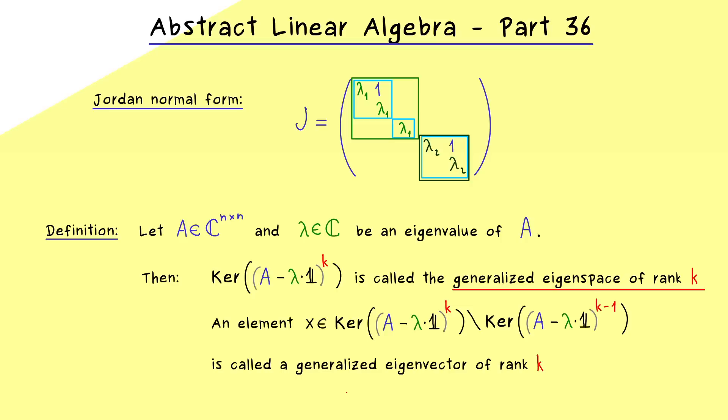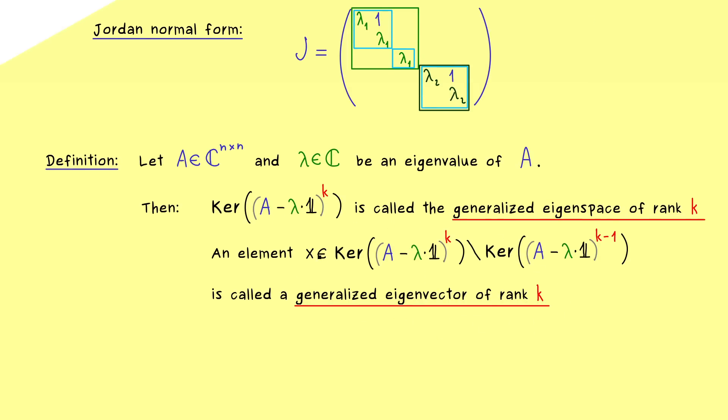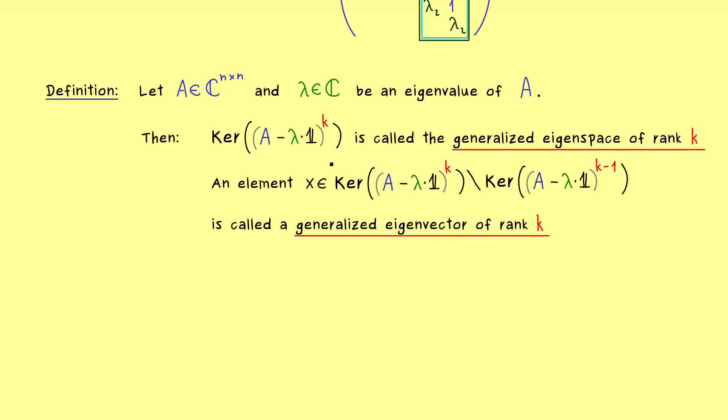And that also explains the name: such an x is called a generalized eigenvector of rank K. And now one of the first things we can notice here is that it could be possible to reduce the rank of x if we multiply with our matrix. Indeed this operation is quite simple, but still important to note.